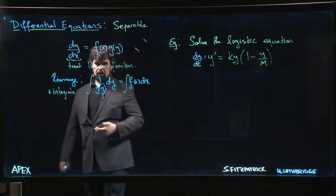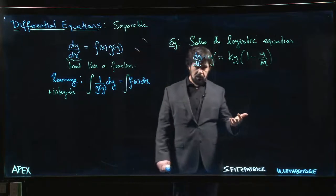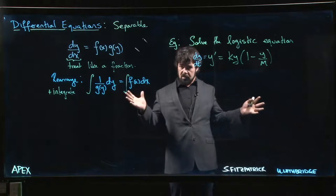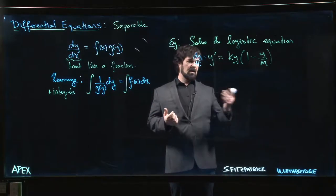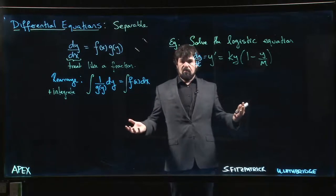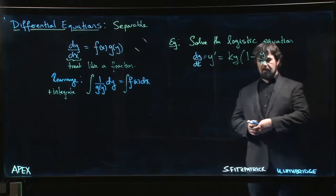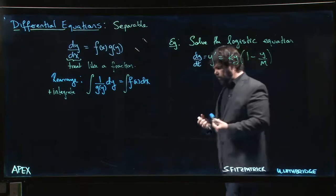Exponential growth is not a particularly great model. Sort of in the short term it might be good but long term is usually not very good because most populations do not grow exponentially forever. At some point you hit like a carrying capacity, you run out of resources, you run out of room. There's a maximum number that your population can reach before you start running into trouble.